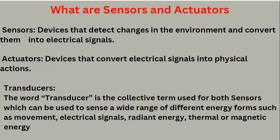What is a sensor? A sensor is a device that detects changes in the environment and converts them into electrical signals. Whatever information is there — light information, sound information — it has to be converted into electrical energy. That type of device which converts one form of energy to electrical signals, we call it a sensor.